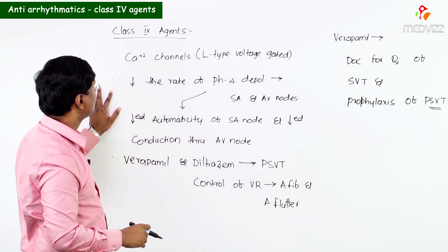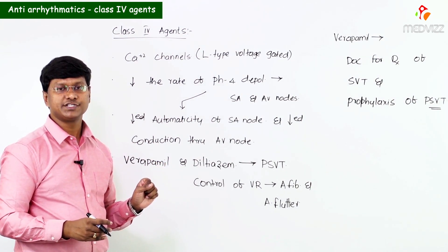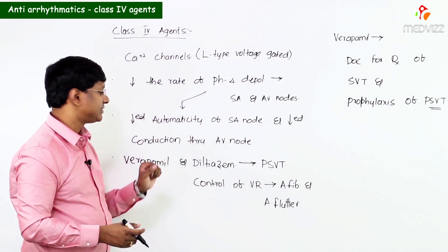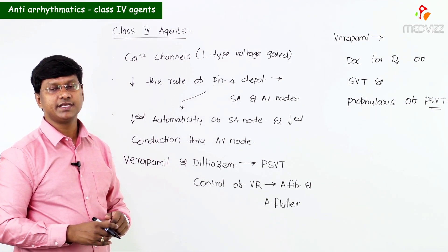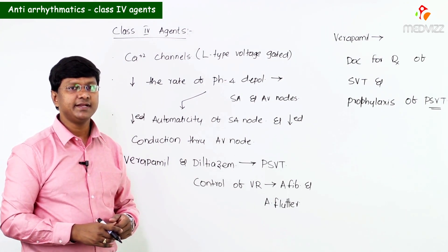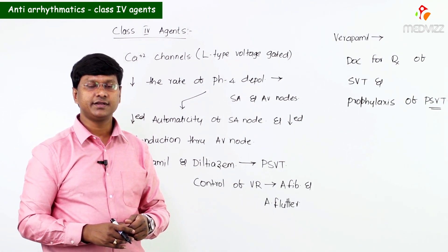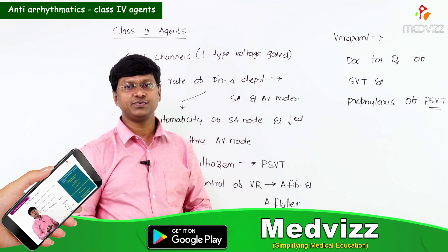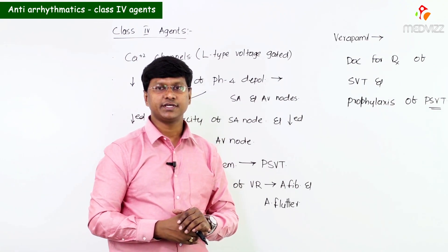To summarize: Class 4 agents are blockers of L-type voltage-gated calcium channels. They decrease the rate of phase 4 depolarization in the SA and AV nodes, resulting in decreased automaticity of the SA node and decreased conduction through the AV node. Verapamil and Diltiazem are indicated for paroxysmal SVT and ventricular rate control in atrial fibrillation and atrial flutter. Verapamil is the drug of choice for treatment and prophylaxis of paroxysmal SVT.